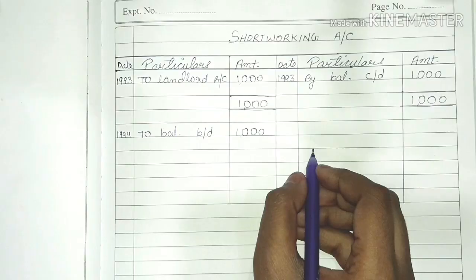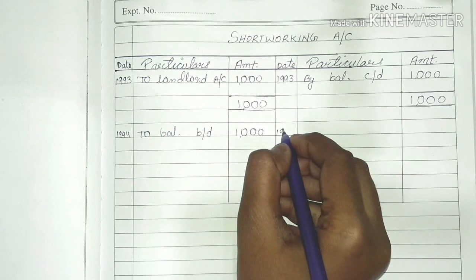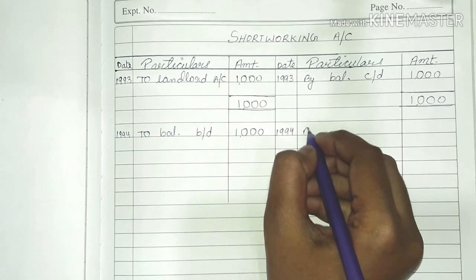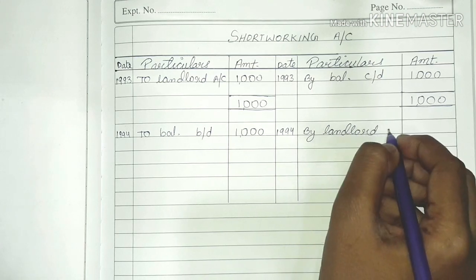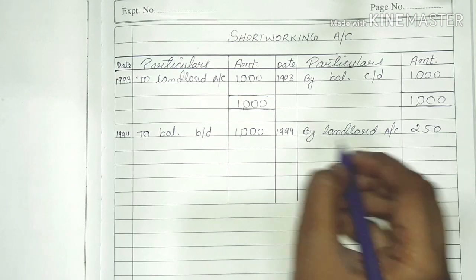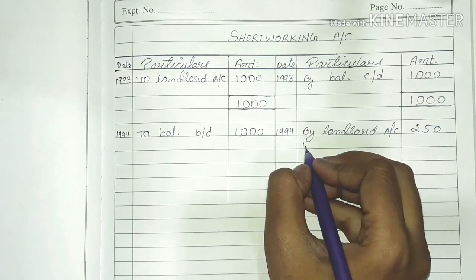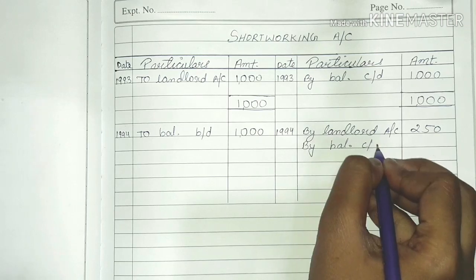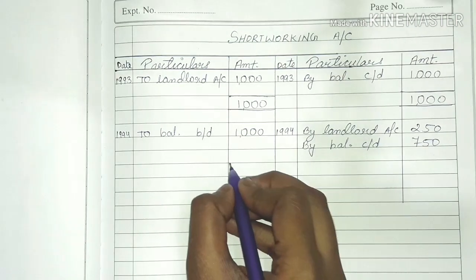In the second year, short working was not done, so we recouped. In 1994, write on credit side: by landlord account, recouped $250. Then save the closing balance — by balance C/D: $750. Total: $1,000. Credit side: 1,000.